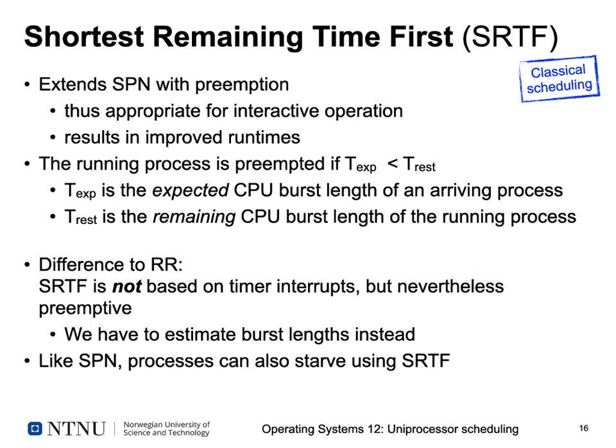Shortest Remaining Time First extends SPN with preemption, making it appropriate also for interactive operation. A running process is preempted if the expected CPU runtime of a newly arrived process is less than the remaining CPU runtime of the current process. Unlike Round Robin, this preemption is not based on timer interrupts but on estimating burst lengths — we need to know how long a CPU calculation takes before the next I/O operation. Like SPN, processes can also starve using this approach.